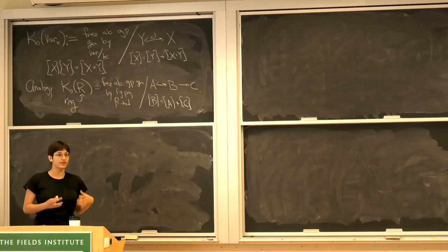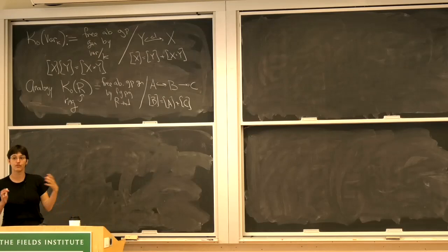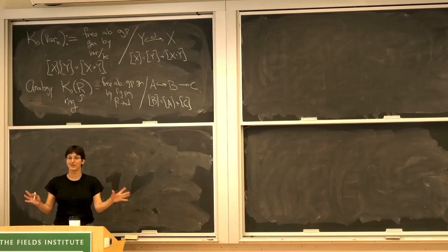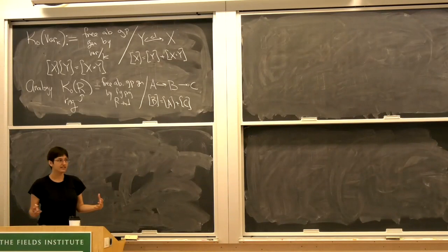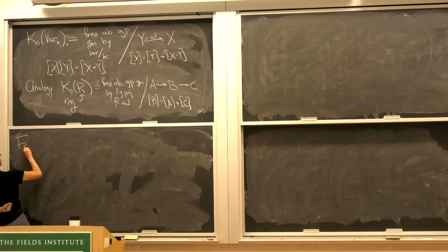The definitions are quite similar, except we have a notion of exact sequence for K-theory of a ring but not for this K-theory of varieties. This means the usual definitions of K-theory involving exact categories, abelian categories, or Waldhausen categories don't directly apply here.